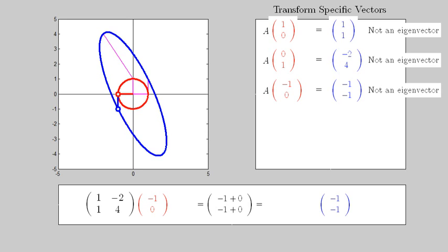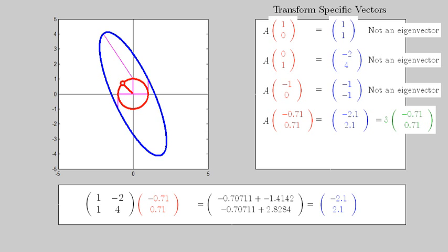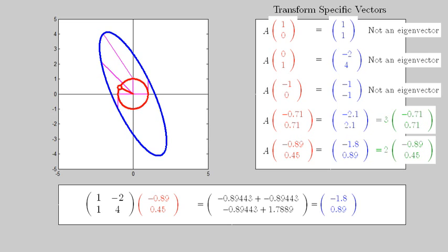However, the fourth and fifth examples are scalar multiples of their pre-images. In the last case, the image of the point (-2/√5, 1/√5) is 2 times that point. The scalar 2 is the eigenvalue, while the point is the eigenvector.